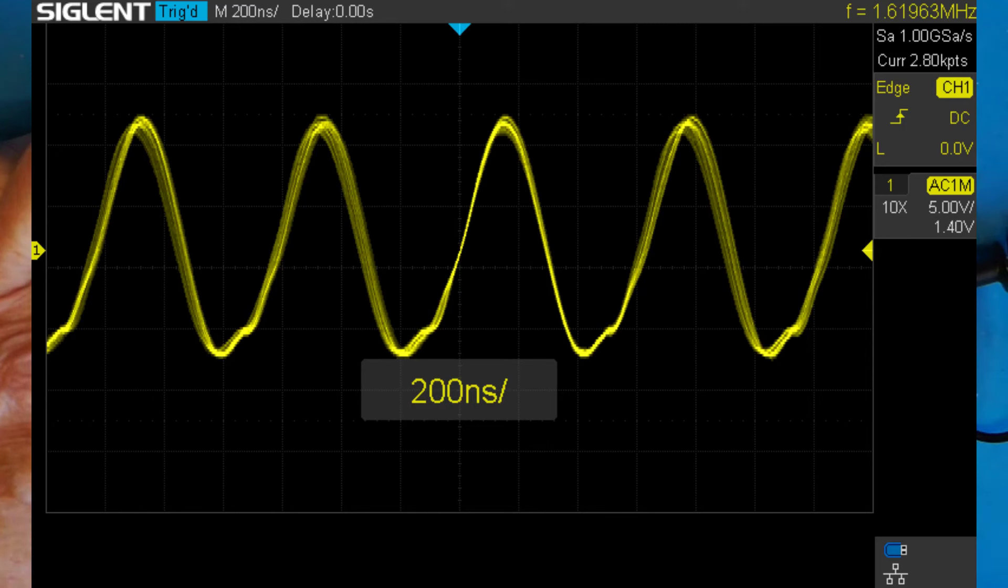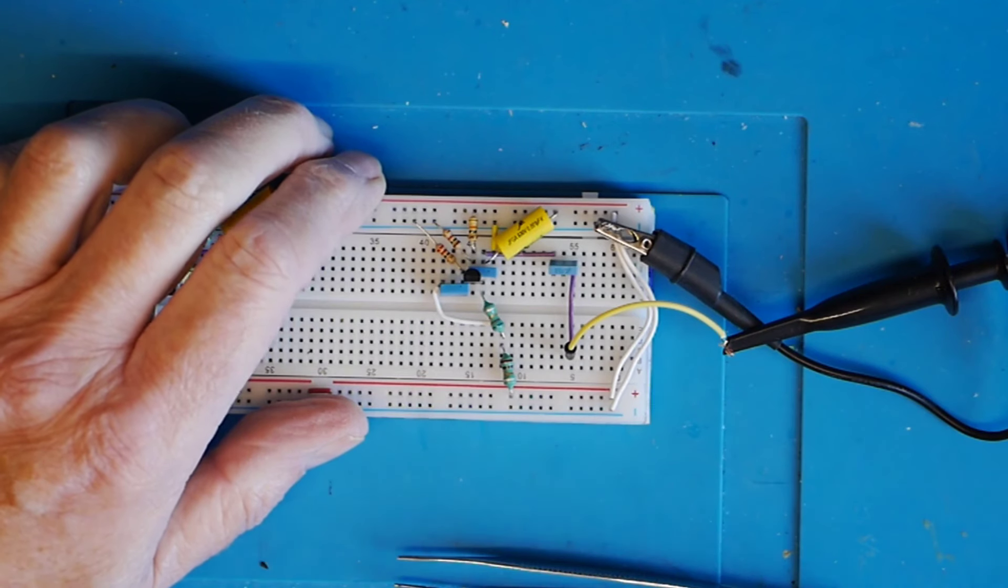So rather than just show you a moving sine wave, here's a grab from the scope of the output. Bear in mind we've got about one and a half megahertz here, something like that, so it's not surprising we haven't got perfect waveform just working on a breadboard without any shields or anything like that and probably a few less than ideal component connections. But that's the Hartley oscillator operation and as you can see it does the job rather well.